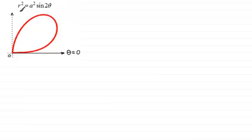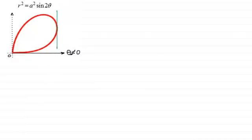The equation of this curve is r squared equals a squared sine 2 theta. One such line that would be perpendicular to this initial line would be this one at this point here. We'd have the tangent coming down like that, perpendicular to the initial line. So how do we find the coordinates of this point and any others on this curve?